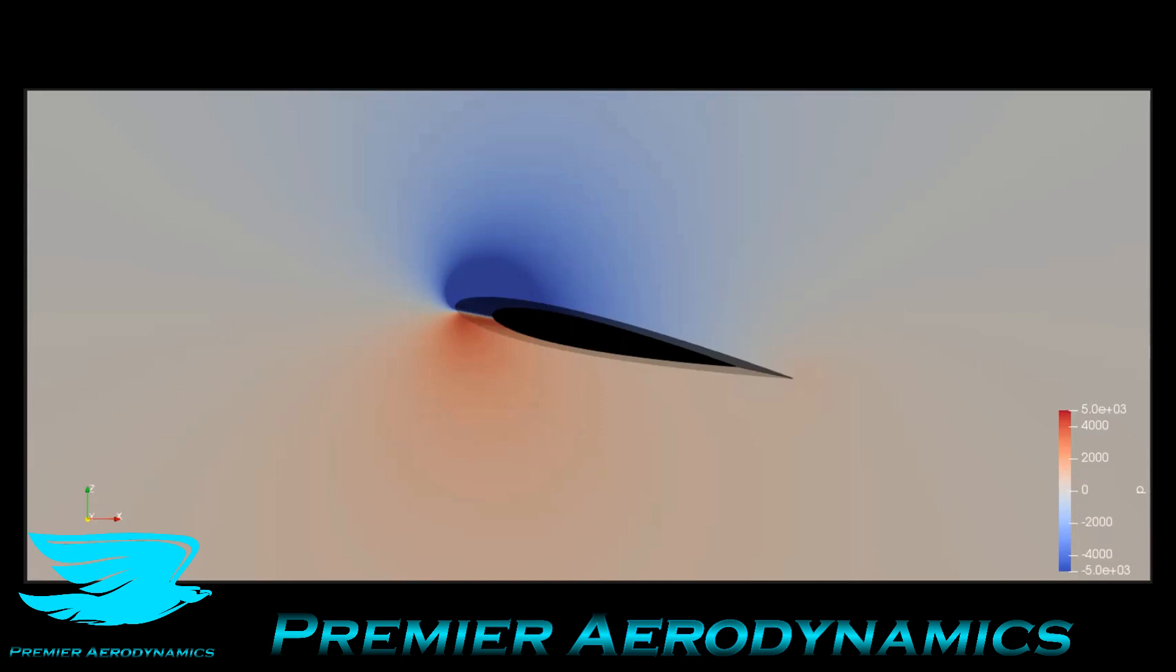The breakdown is that the pressure drag coefficient is 0.0156 and the friction drag coefficient is 0.00566. In other words, it's about three times the amount of pressure drag compared to friction drag, coefficient-wise.